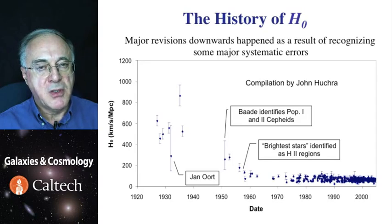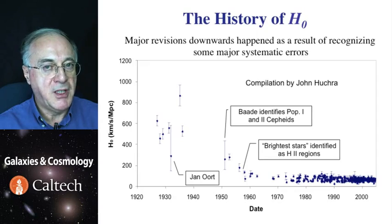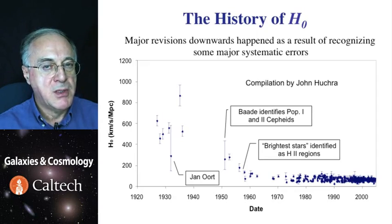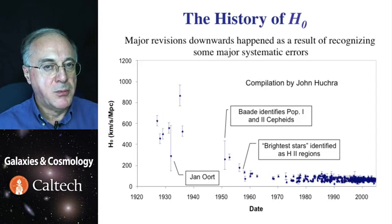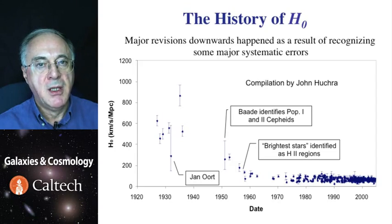The first major revision was due to Walter Baade, who recognized that there are really two very different kinds of pulsating stars, one of which had been confused for the other. He came up with the concept of stellar populations, which immediately halved the value of Hubble's constant. Then improved measurements pushed it further down, and in the 1970s it settled into the range of roughly 50 to 100 kilometers per second per megaparsec.